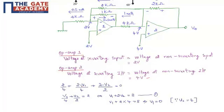From op-amp 1, applying KCL: (2 − Vn)/4 + (2 − Vn)/4 + (2 − V2)/2 = 0, which simplifies to V1/4 + V2/2 = 2, or equivalently V1 + 2V2 = 8. We will call this equation 1.